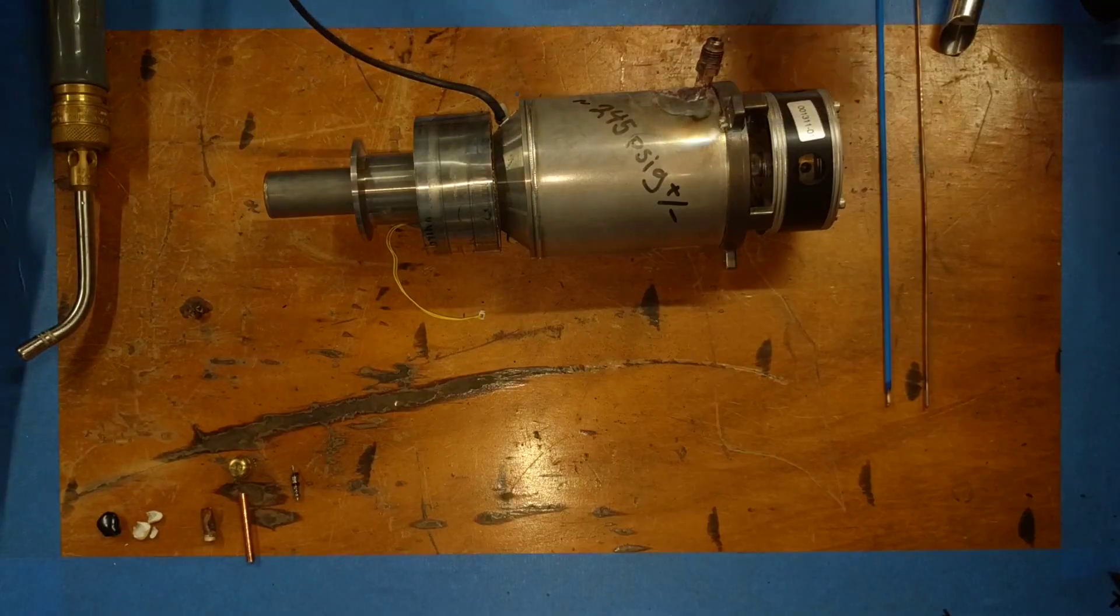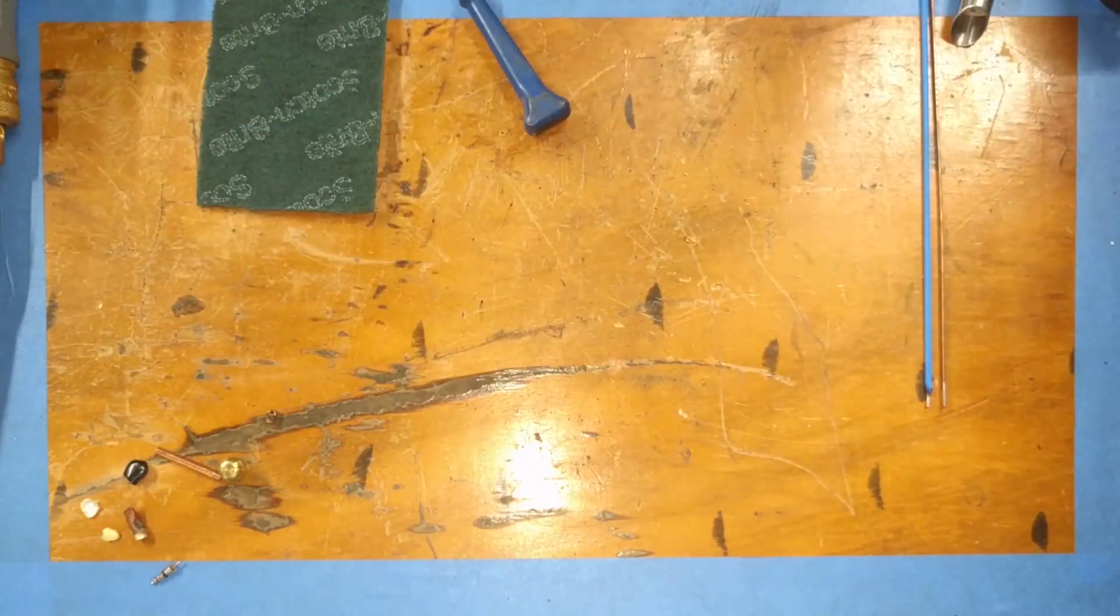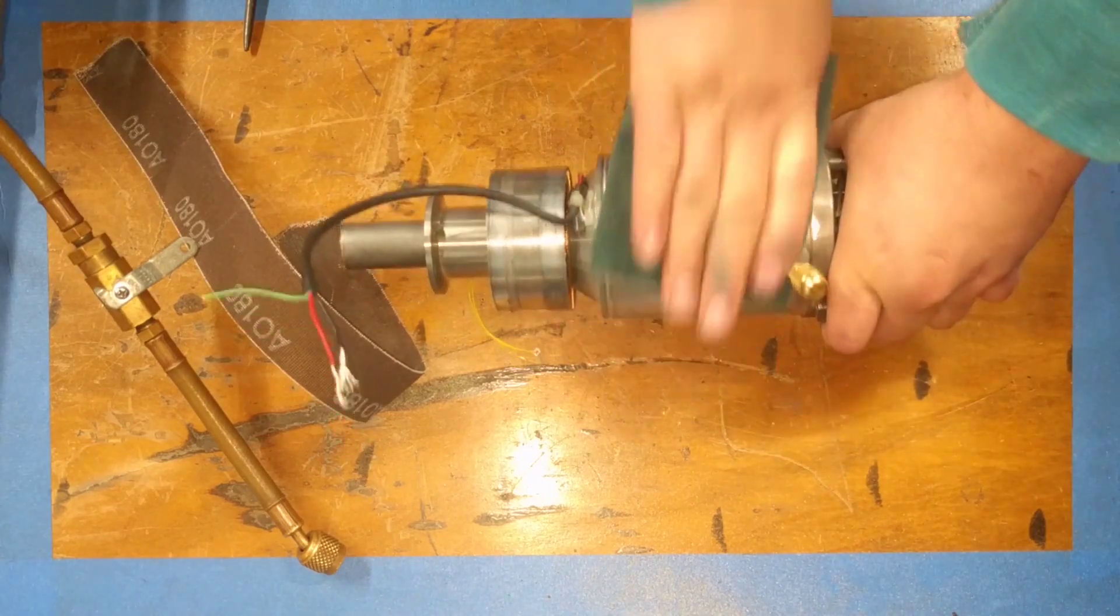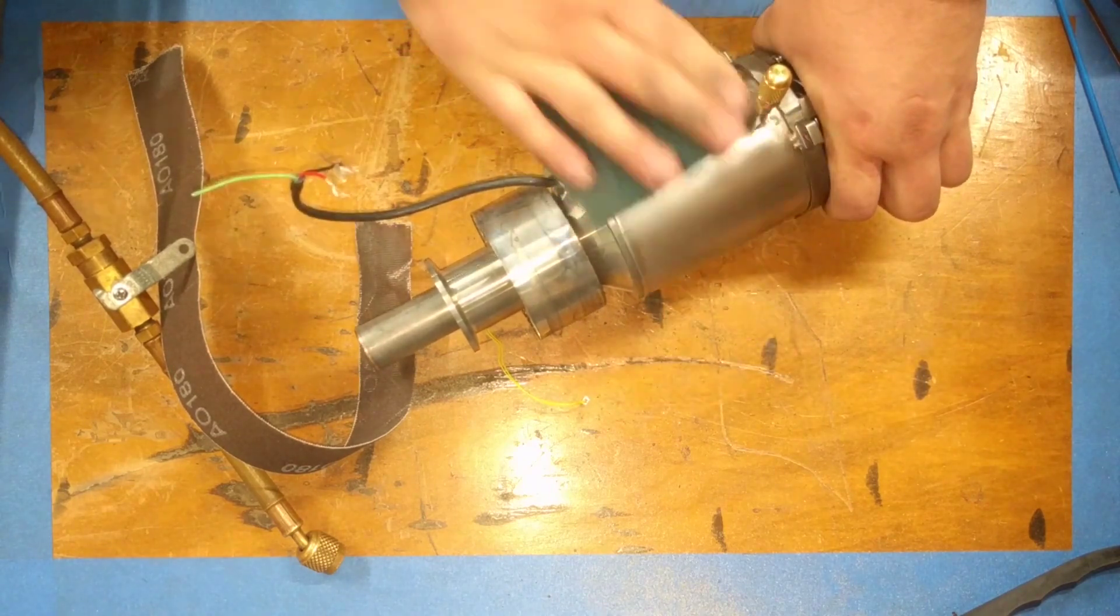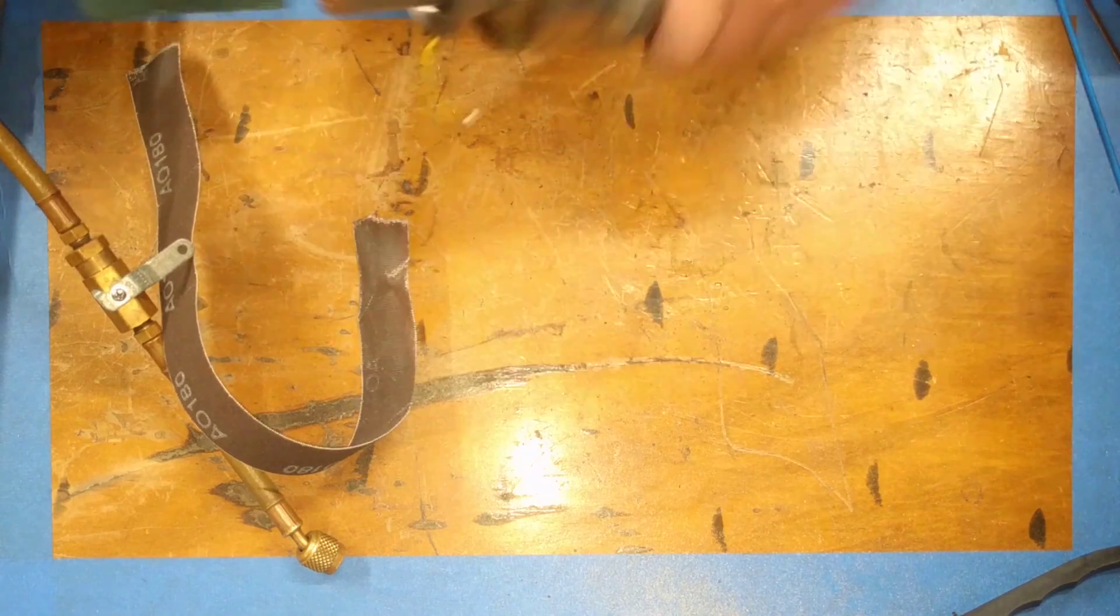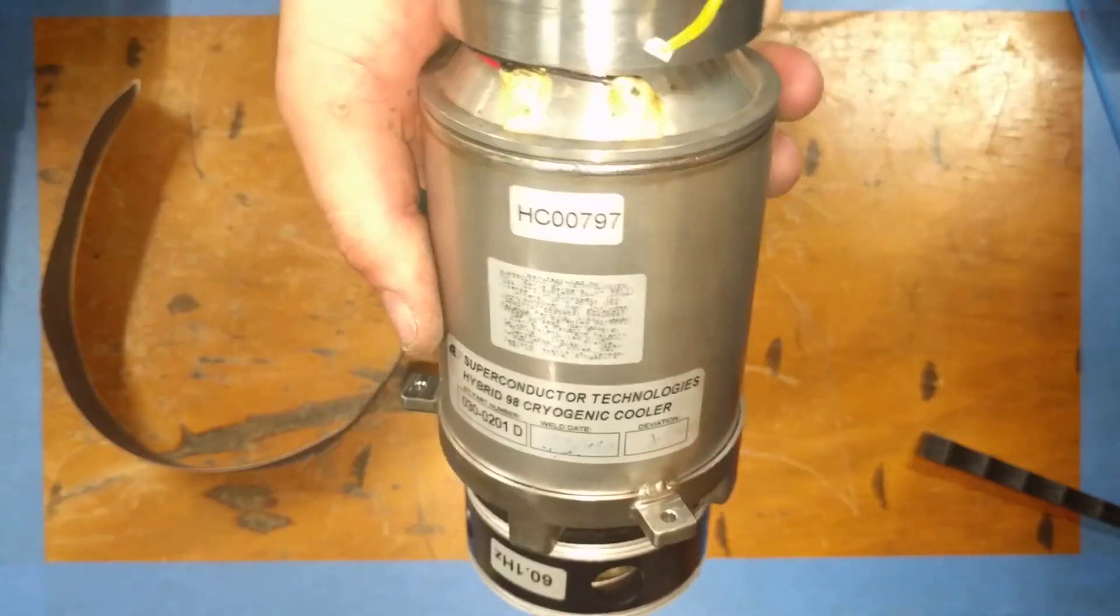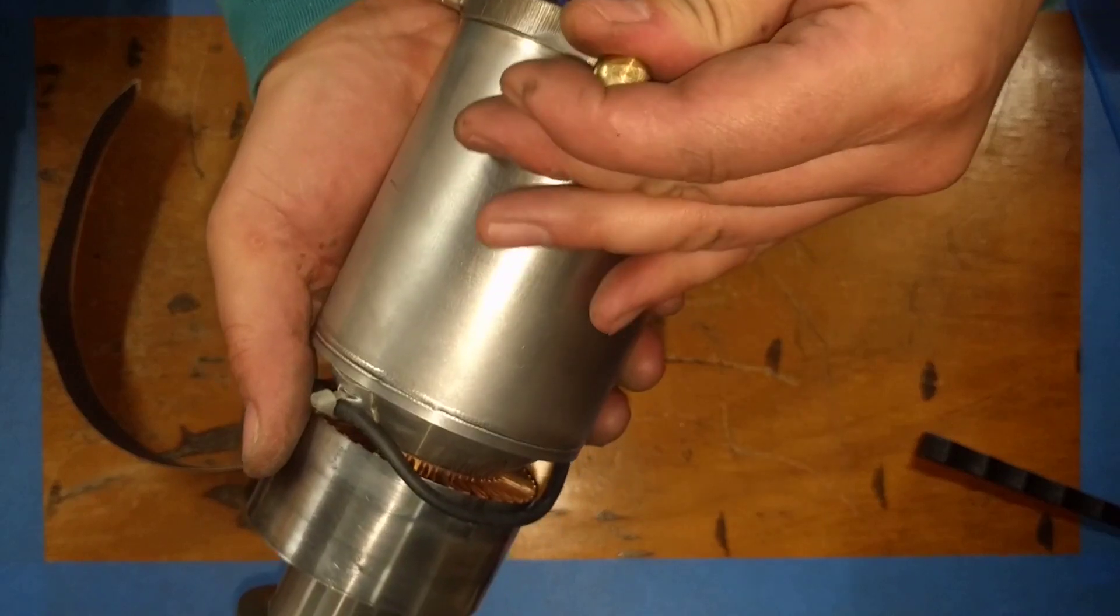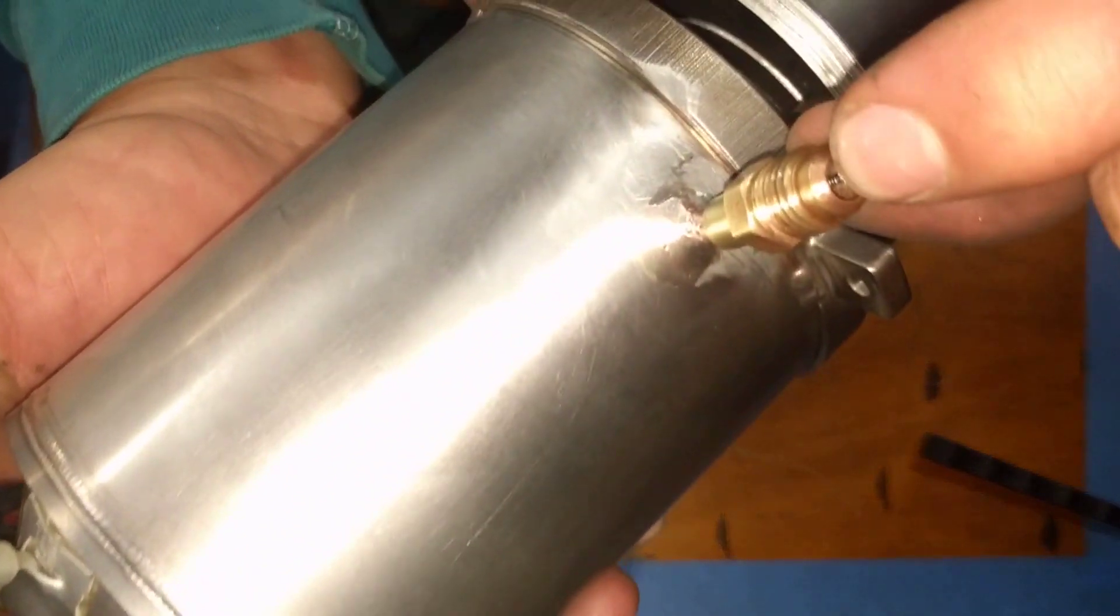After all the braising is complete, I'm going to finish up and clean up the braise and polish it up with some Scotch-Brite. I did put 300 psi of nitrogen on it and bubble checked it, made sure it held pressure. Everything looked pretty good, and that's the finished product. That's how to put a service port on a cryo cooler and give it a recharge of helium.